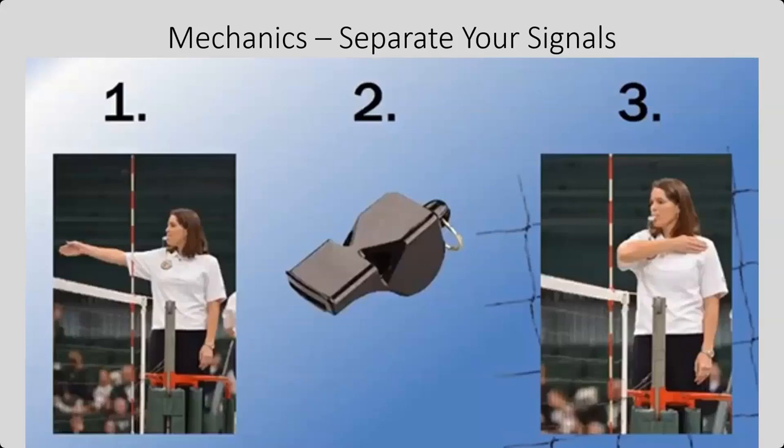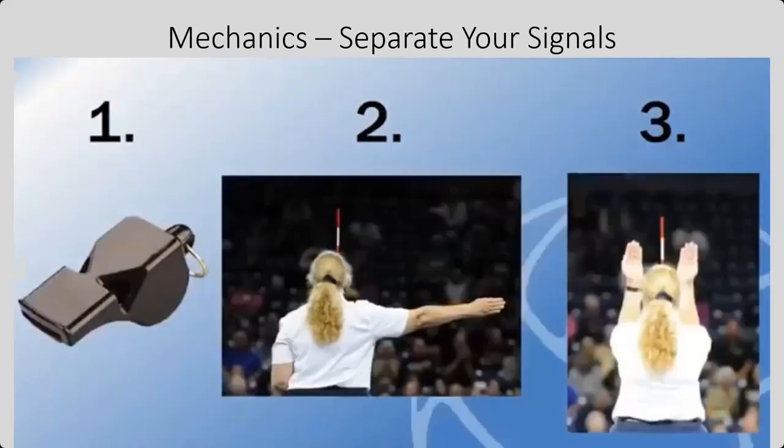To begin the point, you're going to be doing your beckon for serve. Your arm is out, you're checking that both teams are ready, and we're going to separate our signals just like we just did. Your arm's out, you tweet, and then you beckon for serve. All separate actions. And here's what we were talking about earlier. As soon as the ball is dead, tweet, award the point, because the ball was out.